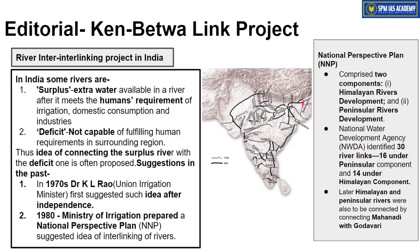In the National Perspective Plan, 30 rivers were identified — 16 from the peninsular area and 14 from the Himalayan region. In the first phase, Himalayan rivers would be connected with each other; in the second phase, the 16 peninsular rivers would be connected with each other. Finally, the Godavari river of the peninsular area would be linked with the Mahanadi of the Himalayan region, connecting all 30 rivers and balancing surplus and deficit water across the country.